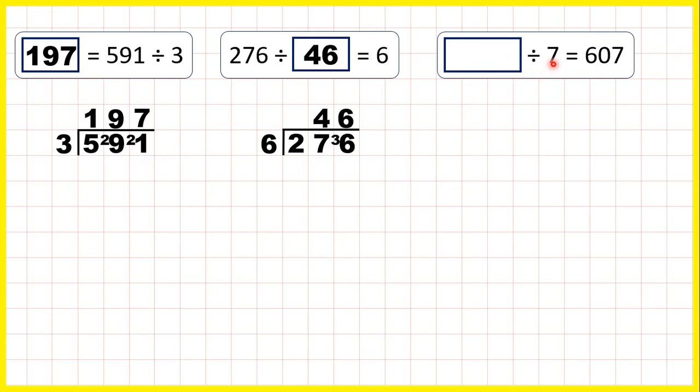So something divided by 7 equals 607. You could read it backwards as 607 times 7, and that would give us our dividend.